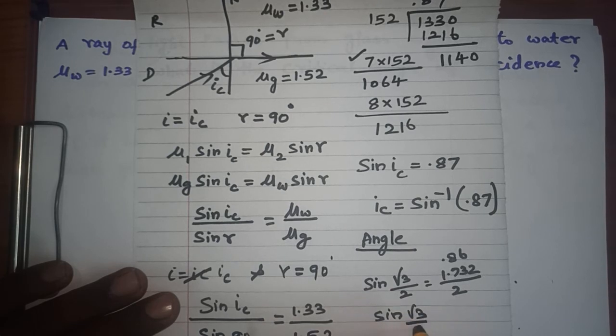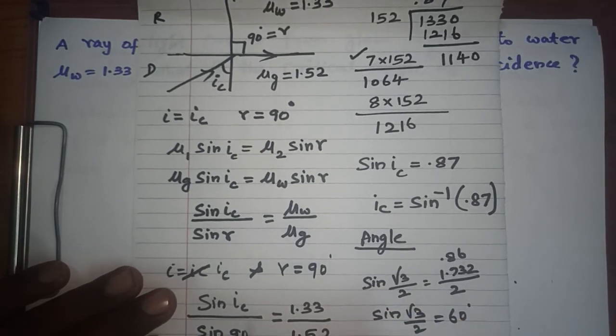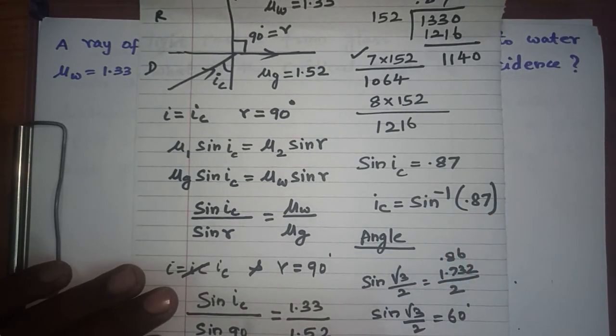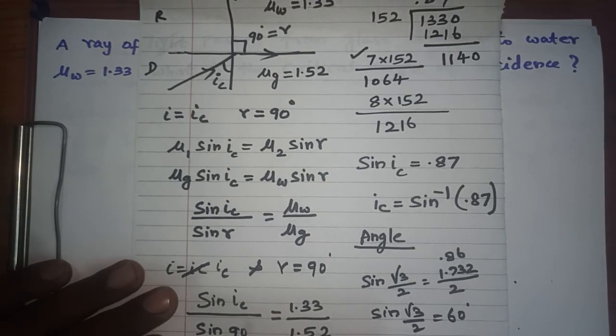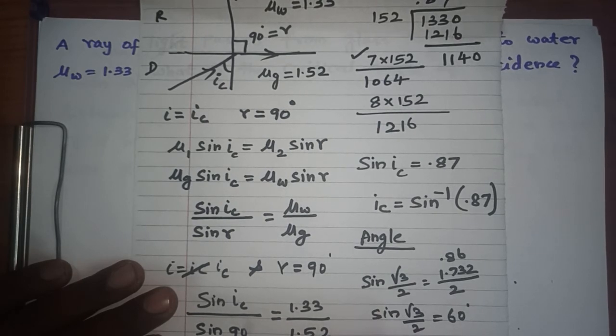Then √3/2 is nothing but sin 60 degrees. Sin 60 degrees is √3/2, and sin inverse of 0.87, I can say approximately, looking at the values given in my options, if there are values near 60 plus, I can write down angle of incidence i_c approximately equals 60 degrees.